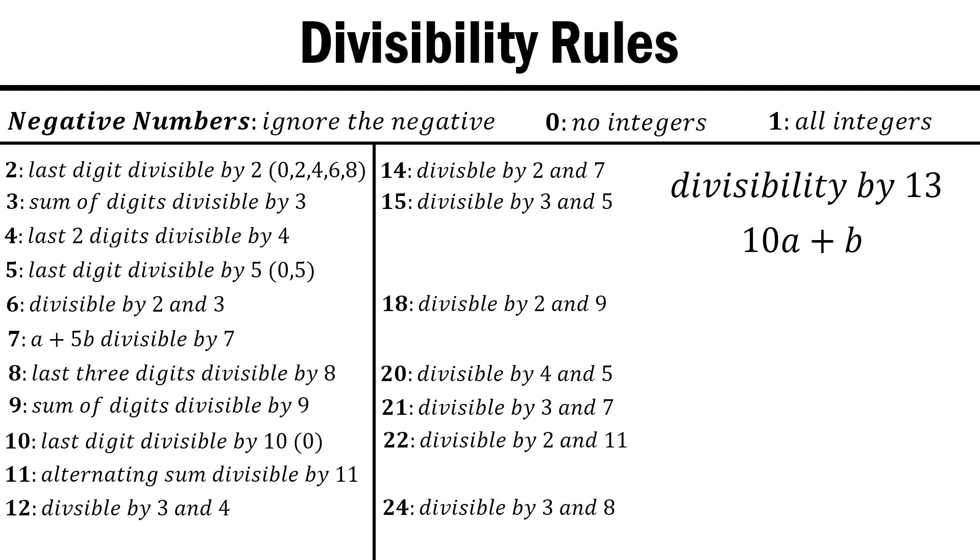We multiply this expression by 4, which gives us 40a plus 4b. We split 40a into 39a plus a, and since 13 times 3 is equal to 39, all we have to do is find whether 13 divides a plus 4b.